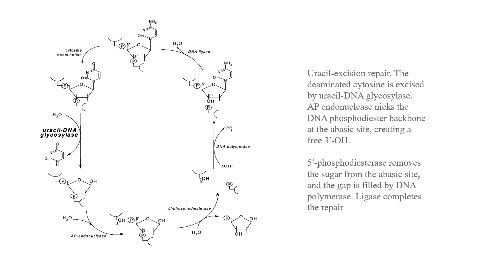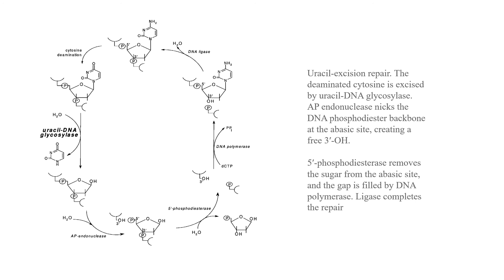I hope that you have enjoyed the series, and I would like to end it by just acknowledging some key references. I've obviously used a lot of references and papers incorporated into the slides. I did want, at the very end, to give special acknowledgement to these three sources that I relied on heavily and think are truly outstanding books if you are interested in these topics: Signature in the Cell: DNA and the Evidence for Intelligent Design by Stephen Meyer; The Myth of Junk DNA by Jonathan Wells; and Foresight: How the Chemistry of Life Reveals Planning and Purpose by Marcos Eberlin. I highly recommend them. Thank you for listening. Take care, and God bless. Assalamu alaikum.